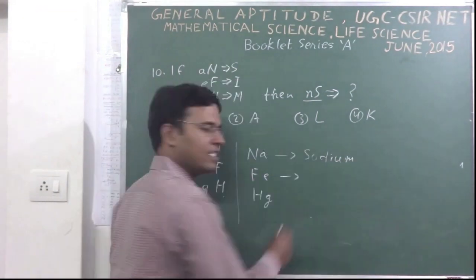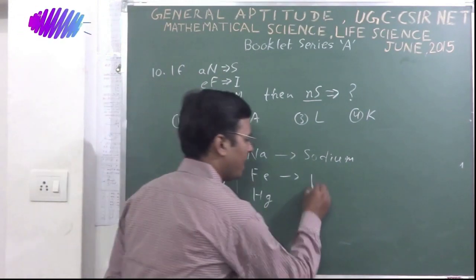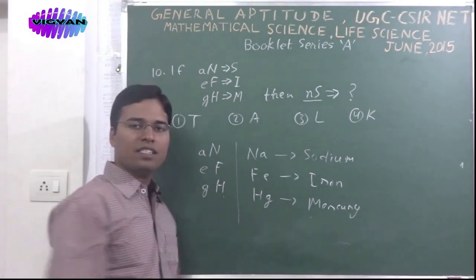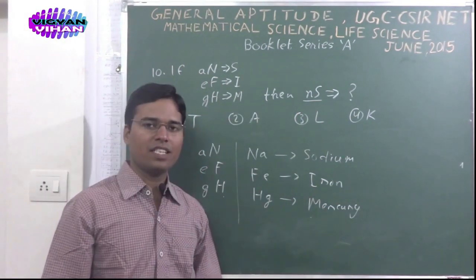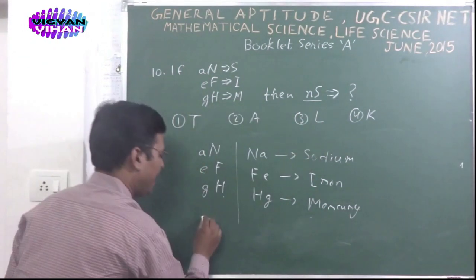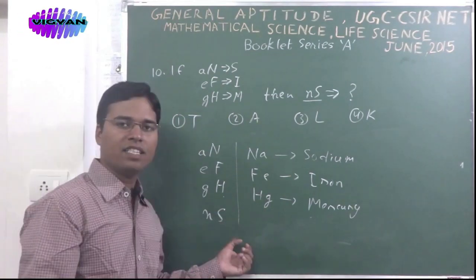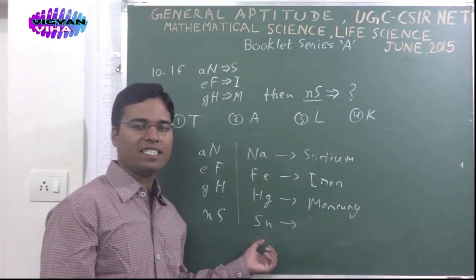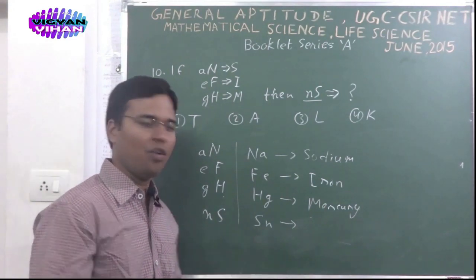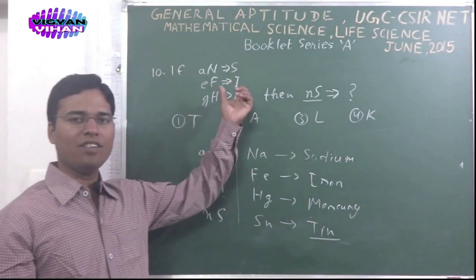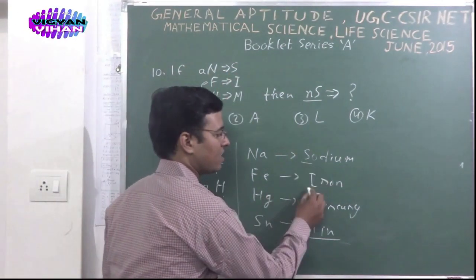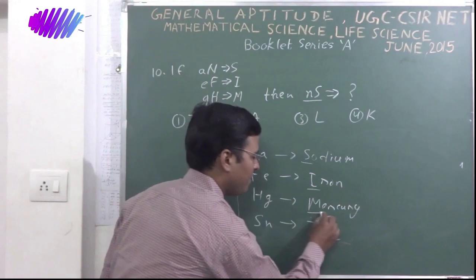Here it is sodium. Second, it is iron. Third, it is mercury. The last which is question code, like N, S. The mirror image would be like this: S and N. That is chemical symbol of tin.